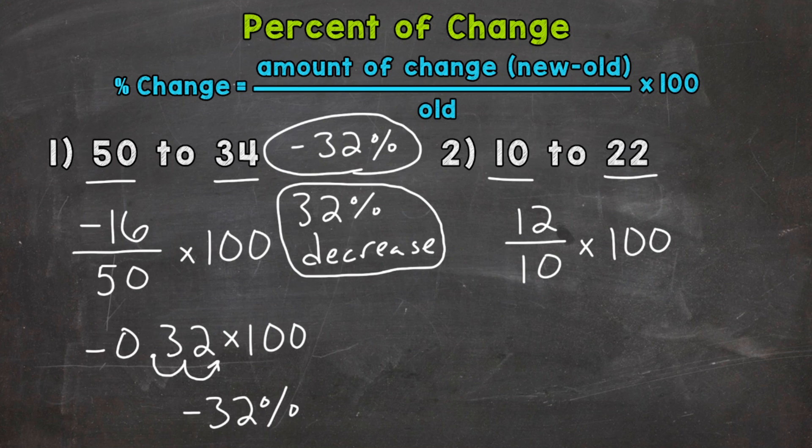12 divided by 10 is going to give us 1.2, and then we multiply by 100 to convert it to a percent. So let's move the decimal twice to the right. One, two, and we can fill that gap with a zero there. So we end up with 120 percent, and that is positive. So we know it's an increase. So we had a 120 percent increase.